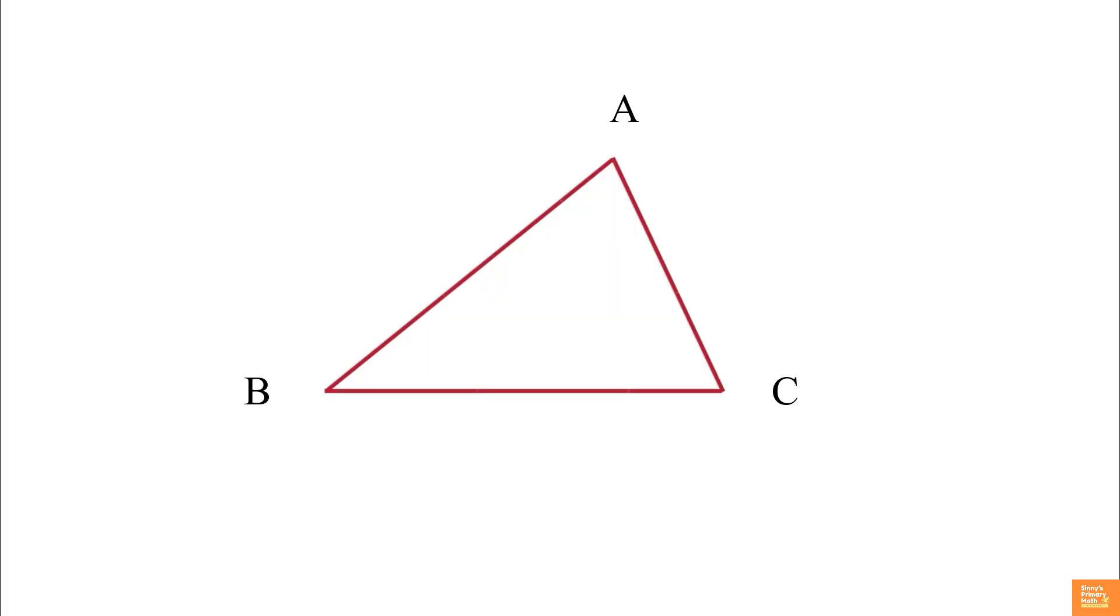We know a triangle is a closed two-dimensional figure which is formed by three line segments. Look at the triangle ABC shown. Every triangle has three sides and three vertices. A base is one side of a triangle usually taken as a reference side for other measurements. The base of a triangle can be any one of the three sides, usually the one drawn at the bottom.